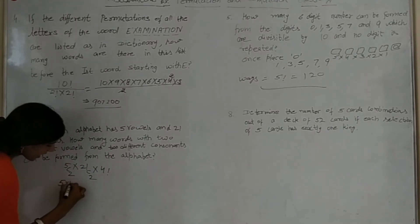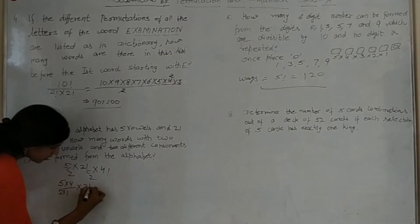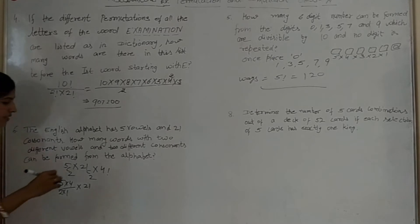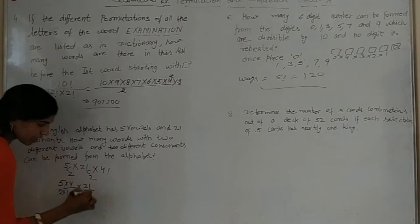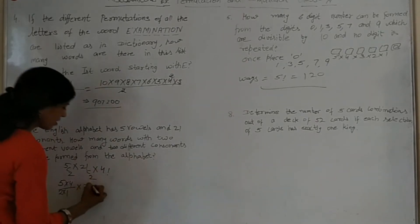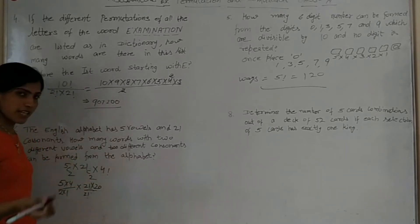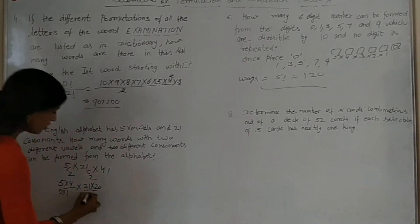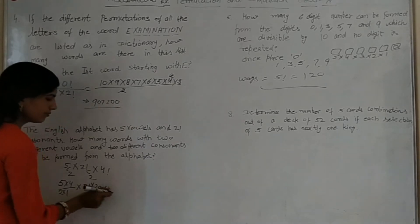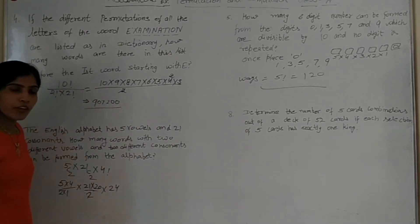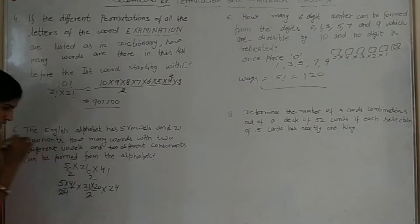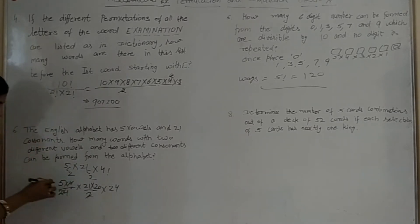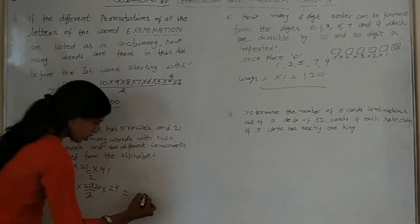Isko solve karna hai. 5C2: 5 × 4 / 2 × 1 = 10. Aur 21C2: 21 factorial by 2 factorial, 21 minus 2 is 19, toh 19 cut jayega. Neeche 2. 4 factorial kitna hota hamara? 24. 4 factorial is 24. Yahaan se dekho: 2 se aur is 2 se 4 gaya. Yeh 4 hamara cancel. 5 × 2 = 10, 10 se toh 2 × 0 aagi hamari — answer 2520.